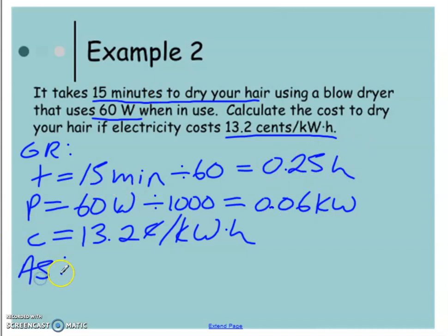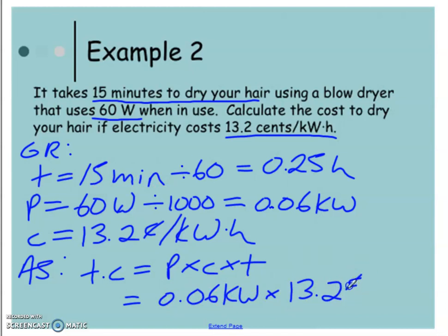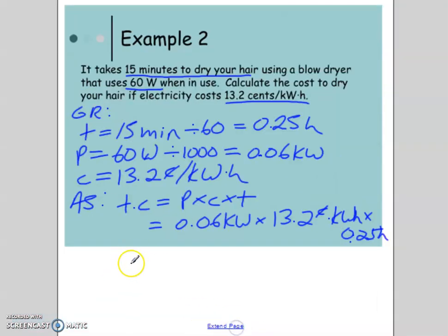Okay, so now that we have everything in the correct units, we are going to figure out the total cost, which is power times time times cost. We have everything in the right units. So now we're just going to plug in everything: 0.06 kilowatts times 13.2 cents per kilowatt hour times 0.25 hours. And don't forget, we're going to put this in unit of dollars after. 0.06 times 13.2 times 0.25, so we get here 0.198 cents, which when you divide this by a thousand, we get 0.00198 dollars.